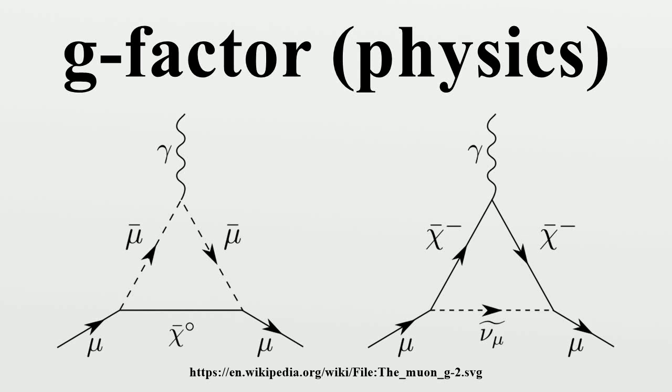A g-factor is a dimensionless quantity that characterizes the magnetic moment and gyromagnetic ratio of a particle or nucleus. It is essentially a proportionality constant that relates the observed magnetic moment μ of a particle to its angular momentum quantum number.